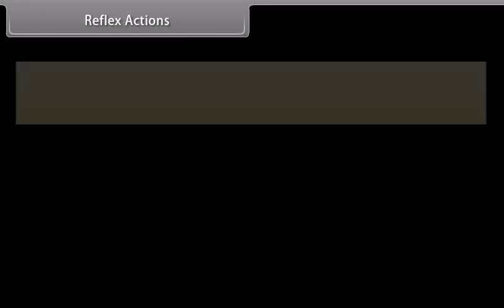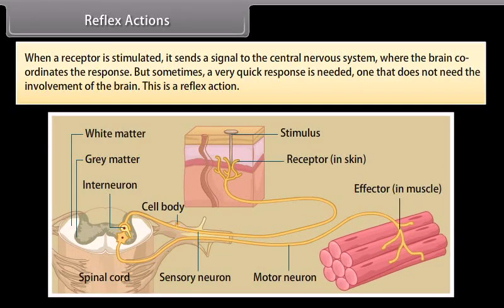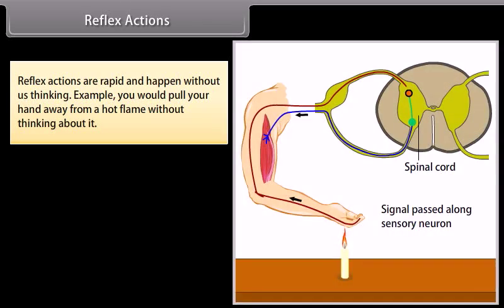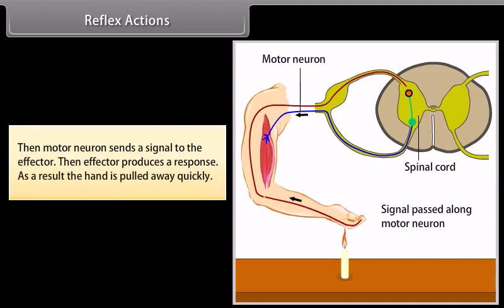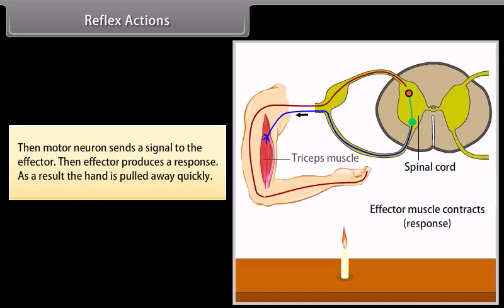When a receptor is stimulated, it sends a signal to the central nervous system where the brain coordinates the response. But sometimes a very quick response is needed — one that does not need the involvement of the brain. This is a reflex action. Reflex actions are rapid and happen without us thinking. For example, you would pull your hand away from a hot flame without thinking. A receptor detects the stimulus; a sensory neuron sends a signal to the relay neuron; the relay neuron sends the signal to the motor neuron; the motor neuron sends a signal to the effector; and the effector produces a response — the hand is pulled away quickly.